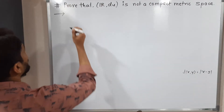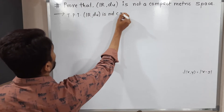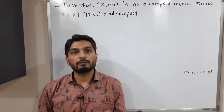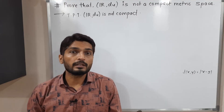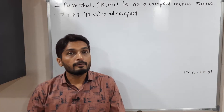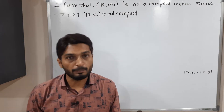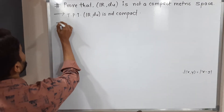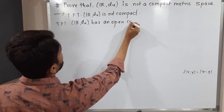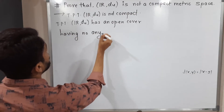So to prove that ℝ with d_u is not compact, we recall: if every open cover has a finite subcover, then we say the metric space is compact — we already saw this definition in the previous video. So here, to prove it is not compact, we have to prove that there exists an open cover of ℝ which has no finite subcover.